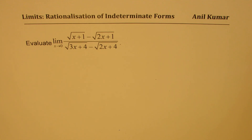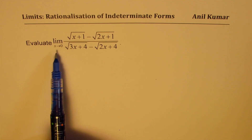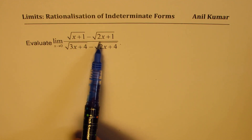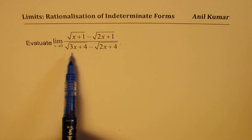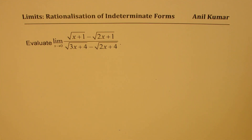Here is an excellent question from my student who wants to understand how to find the limit of the given function, which is: limit as x approaches 0 of square root of (x plus 1) minus square root of (2x plus 1), divided by square root of (3x plus 4) minus square root of (2x plus 4).